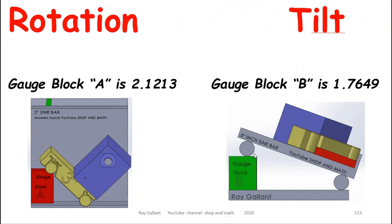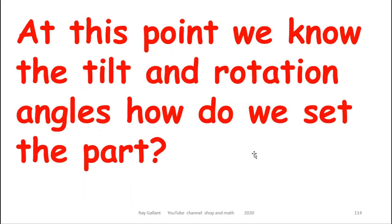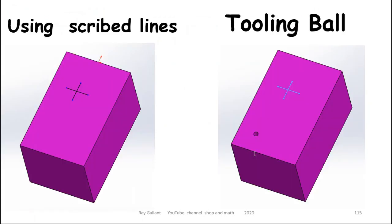So we have our two gauge block heights. Now, the difficult part about setting this up is how we find the actual location that we're going to drill our hole in.